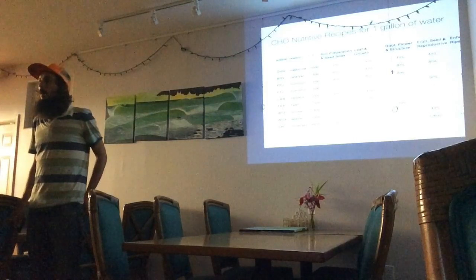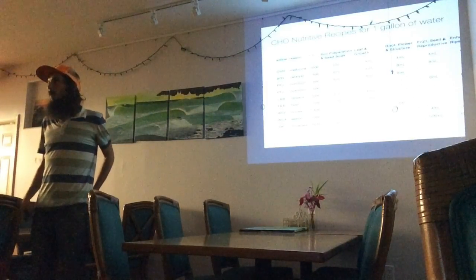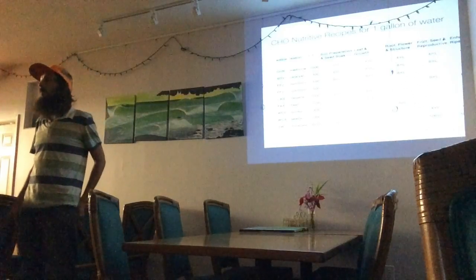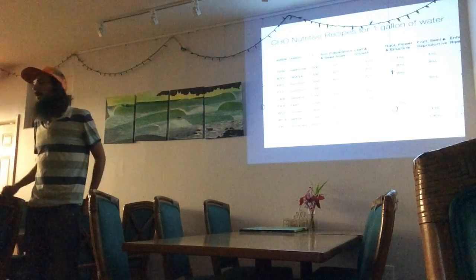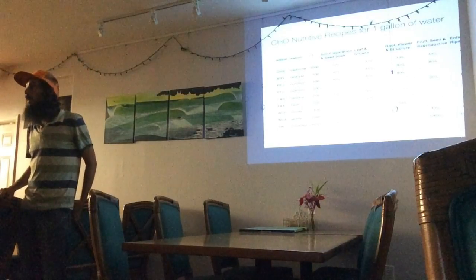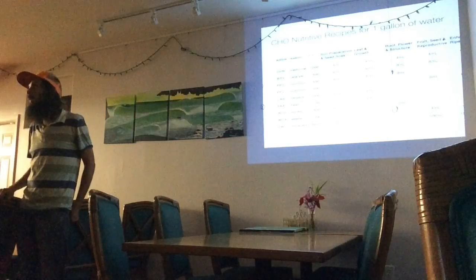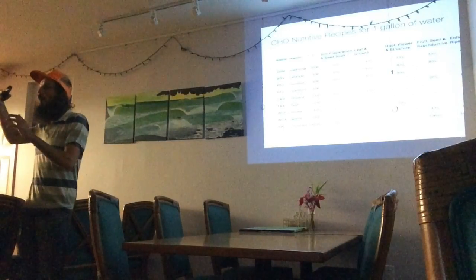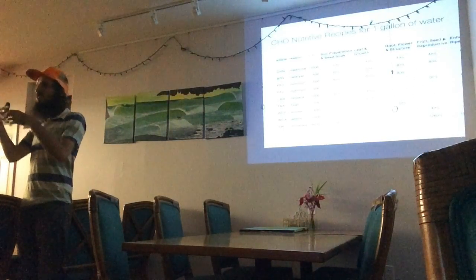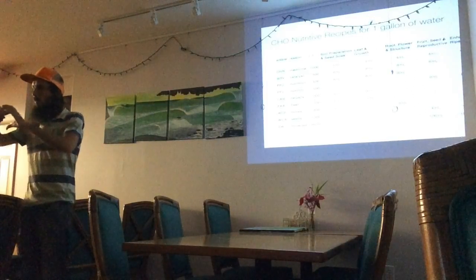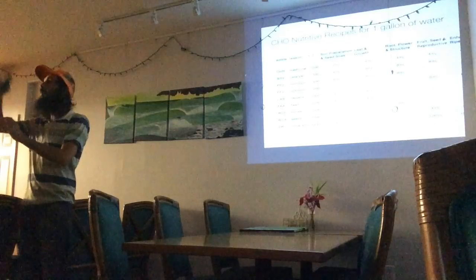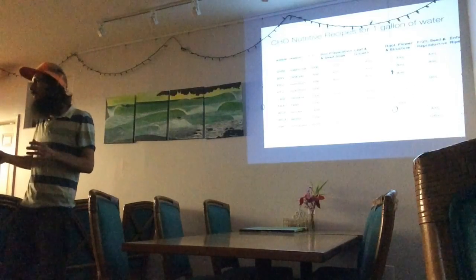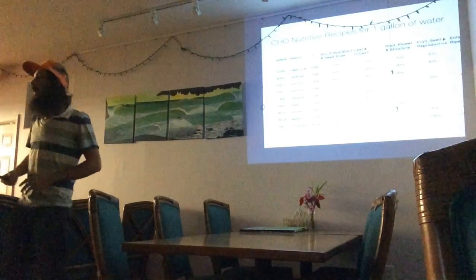Seed soak duration depends on how fast the seed sprouts. Things like beans that sprout fast — you can soak them for like 15 minutes to half an hour. Things that take a really long time to sprout, you can soak them much longer, up to six hours. The main thing is to have those microbes start to penetrate into the seed as it softens a little bit. You're not just dipping for a few seconds — you want at least 15 minutes to a few hours for it to really penetrate in.